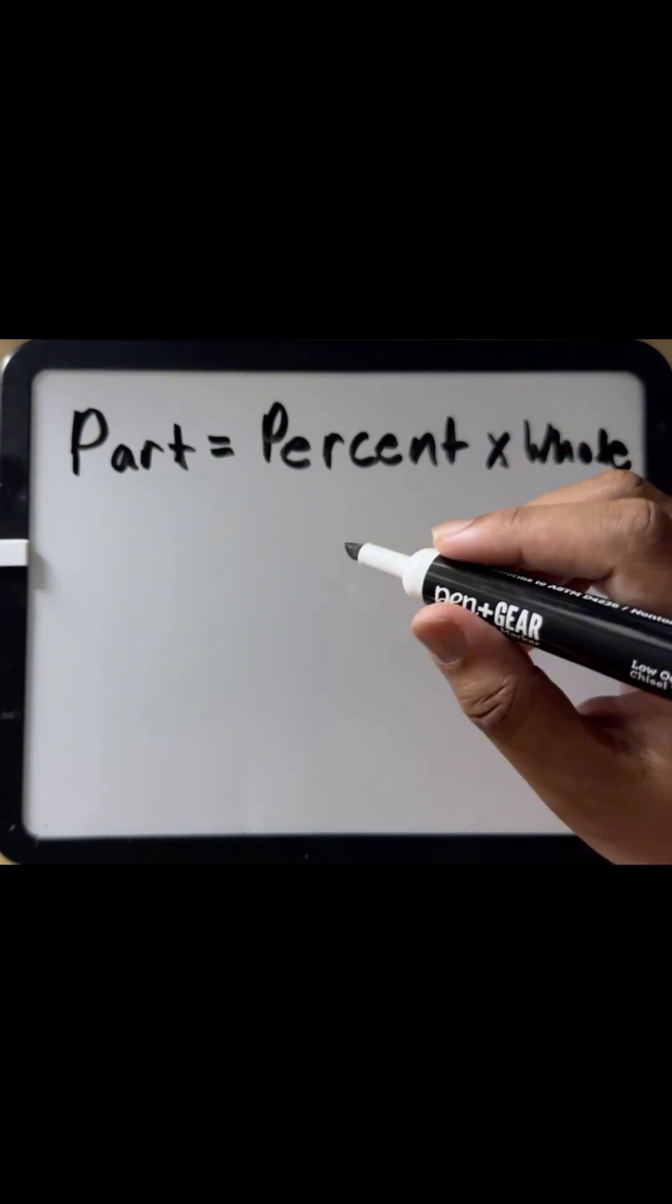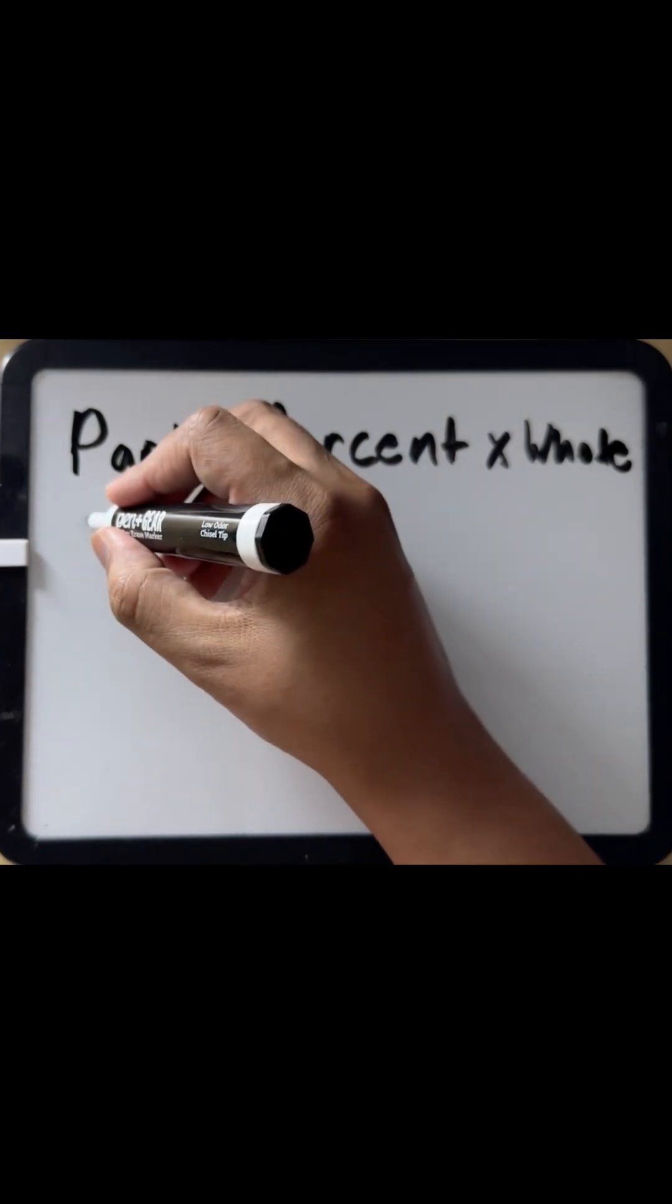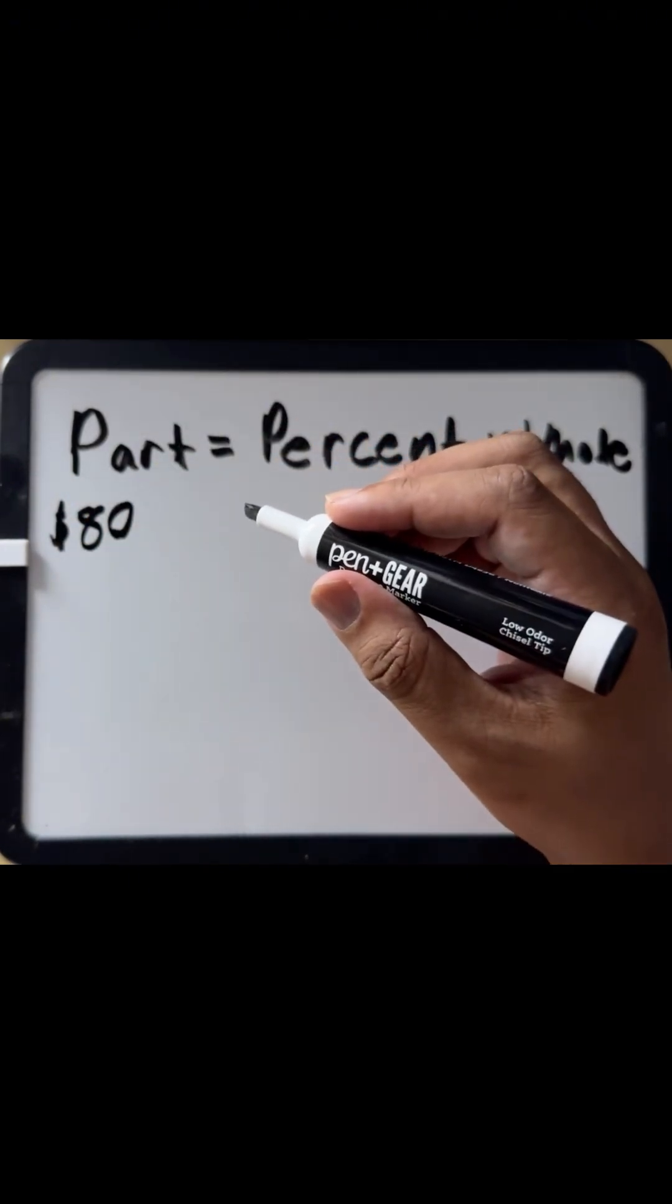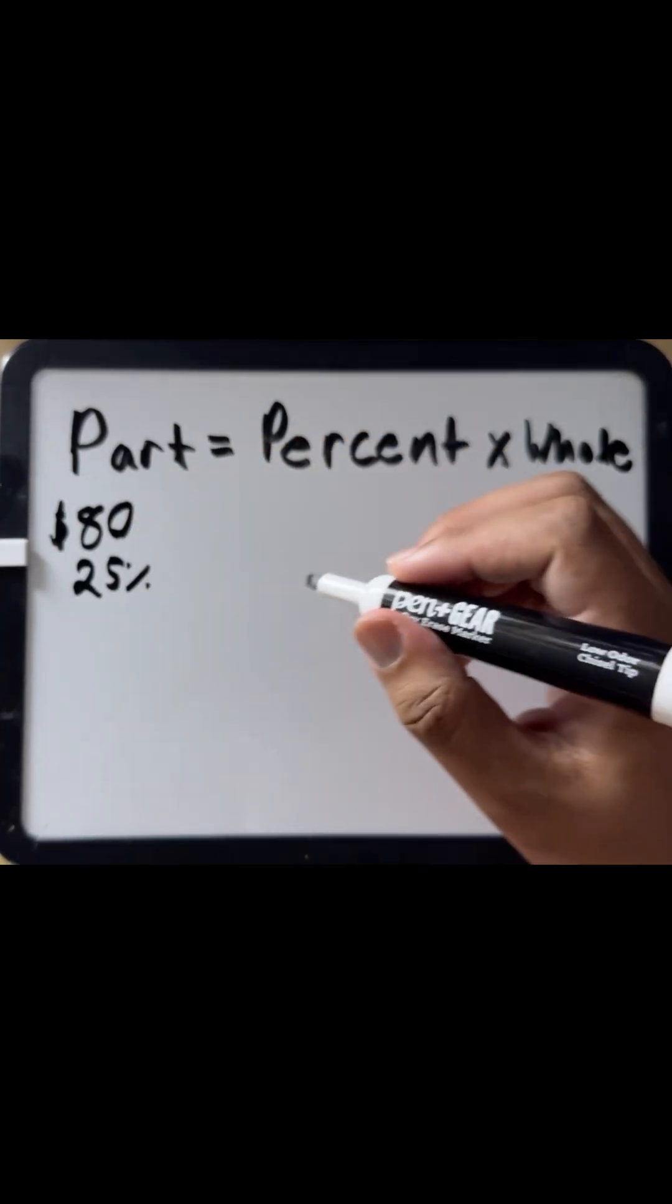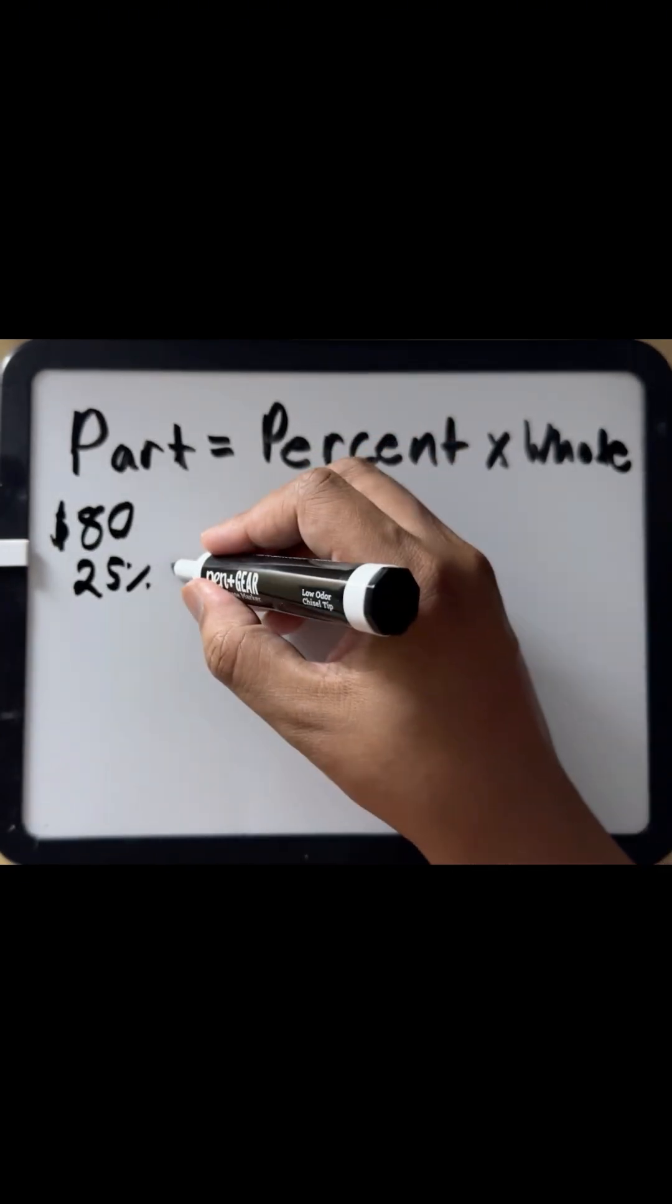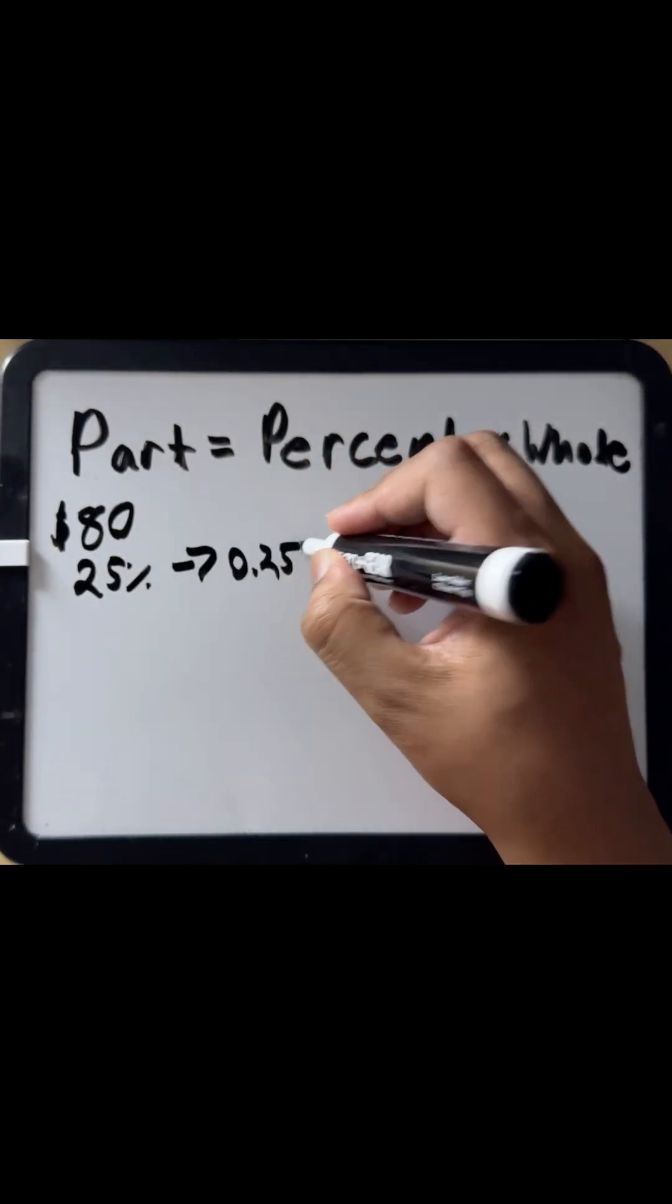So step by step, let's identify what we do know. We know that the original price of the jacket is $80. The percent off is 25%. And we need to convert that percentage to a decimal, giving us 0.25.